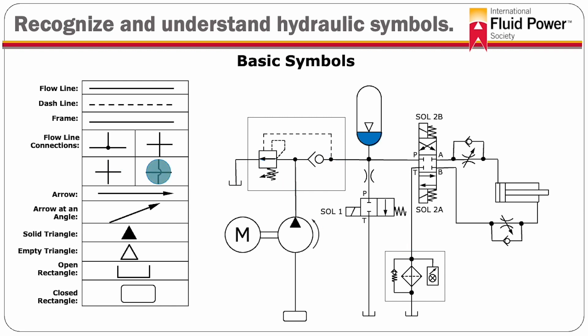Some historical schematics may be drawn with an arc around the crossed flow line, but this no longer meets the ISO specification.